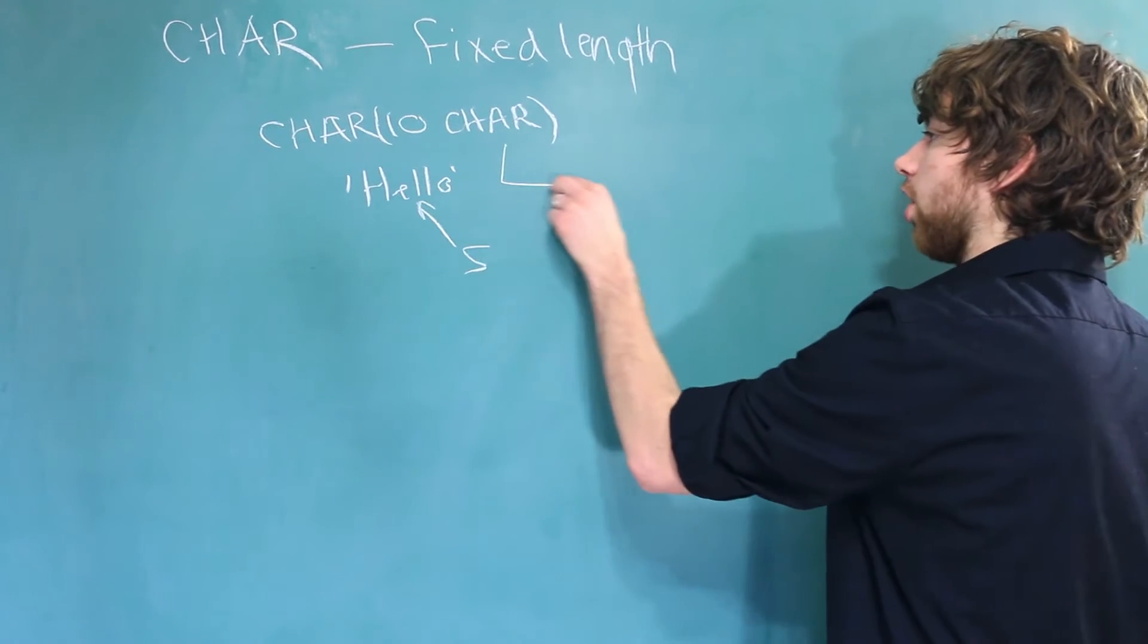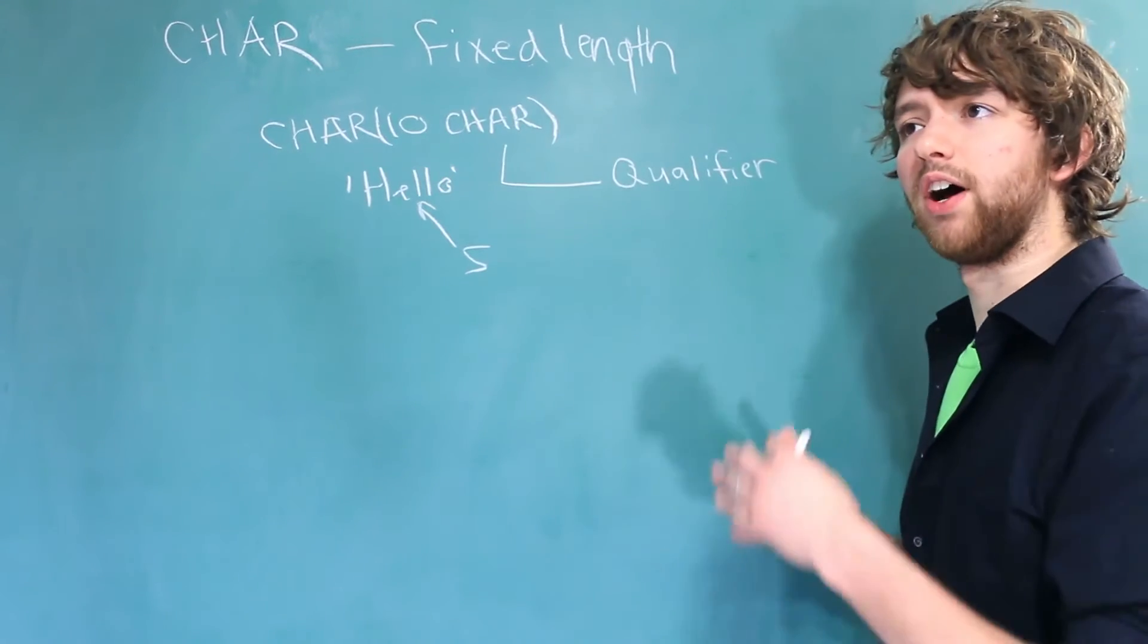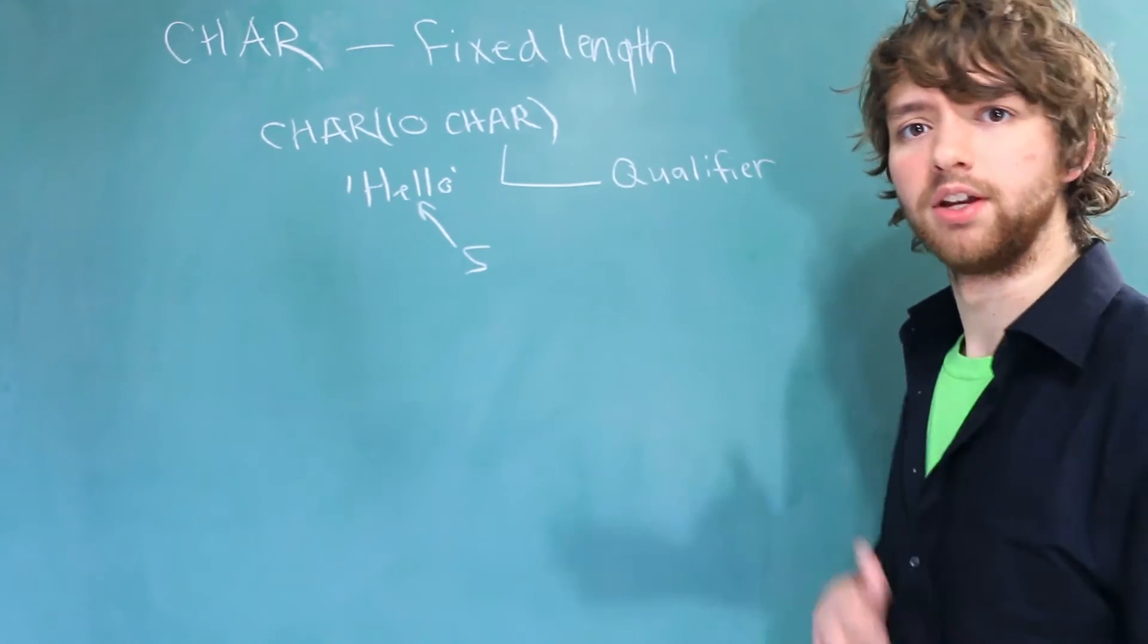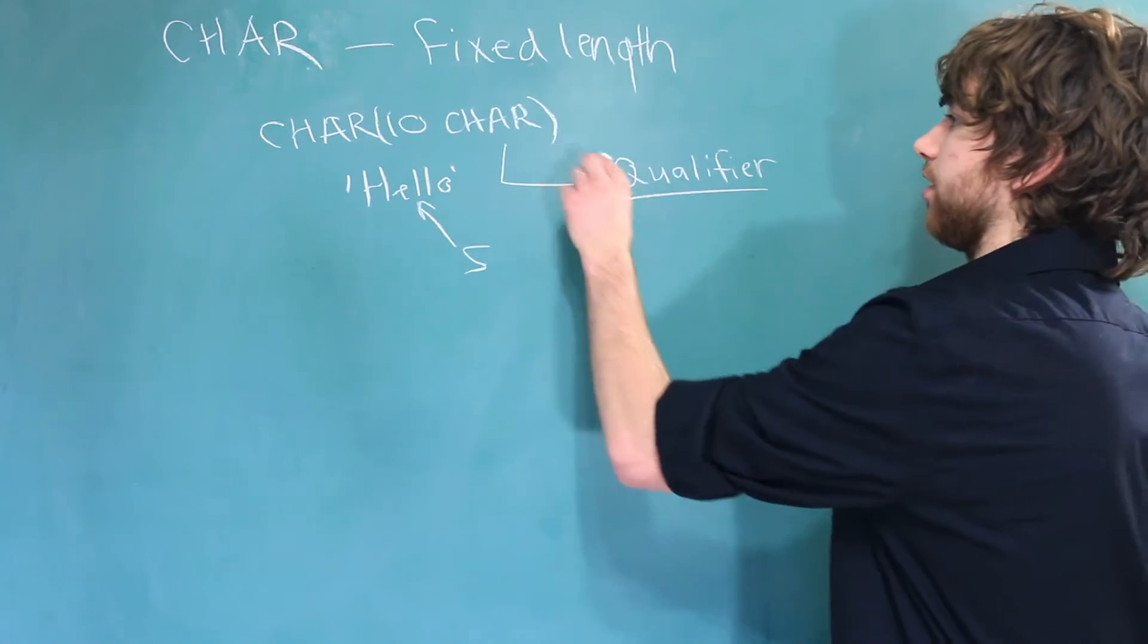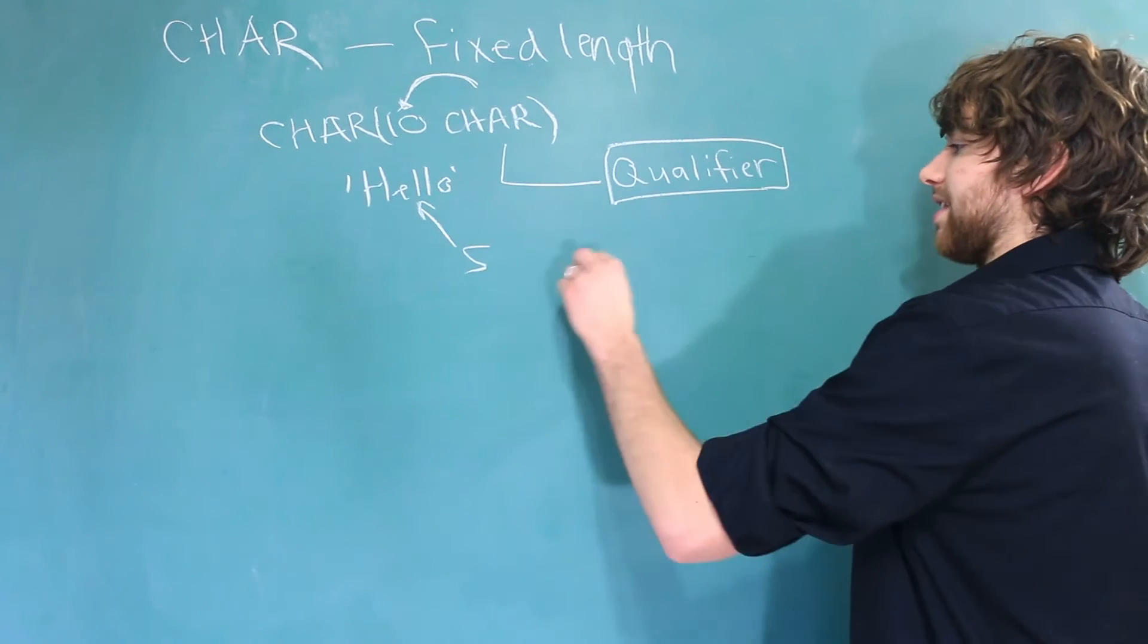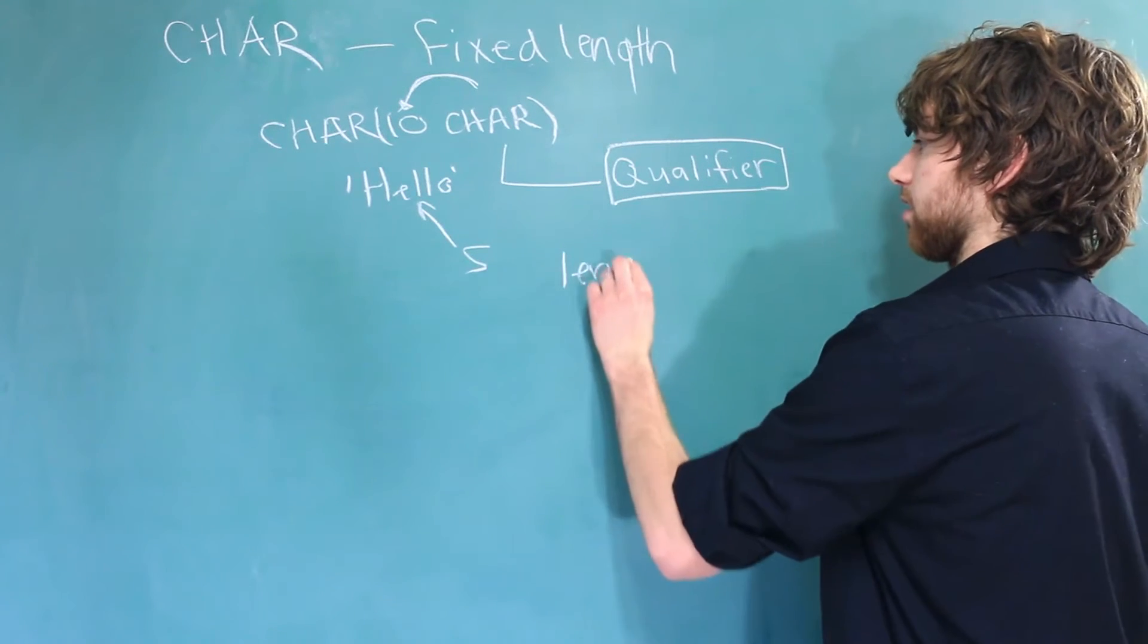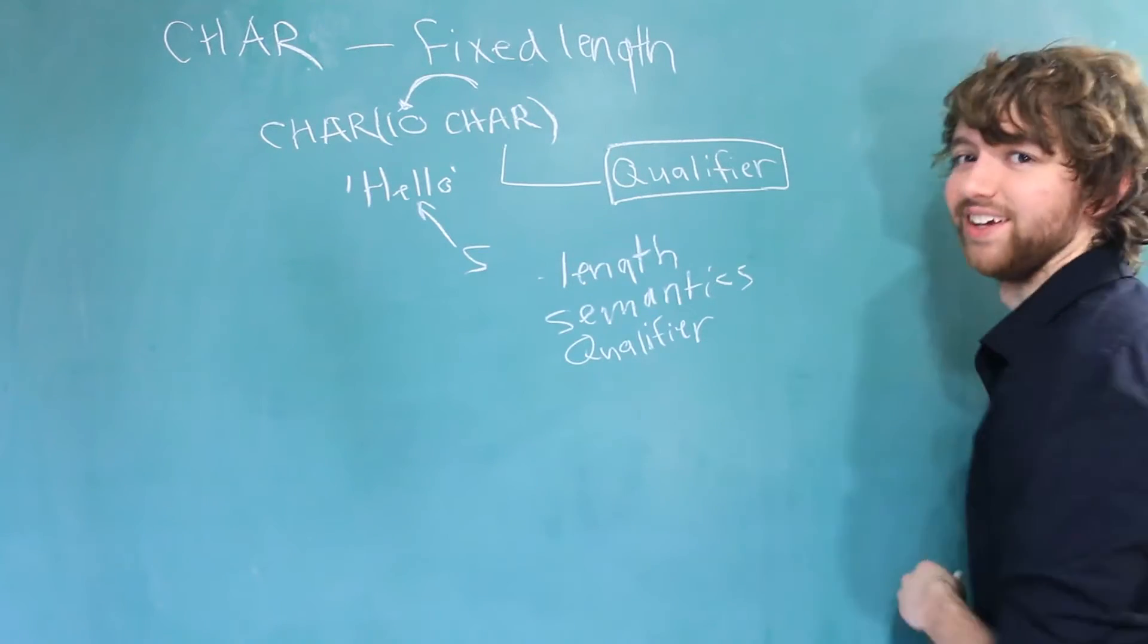Now this keyword here, char, this is known as a qualifier. You can think of a qualifier as something that describes something. So kind of like an attribute describes an entity, this qualifier describes what this 10 means. Specifically, this is known as a length semantics qualifier. Lots of big words here.